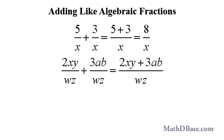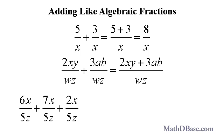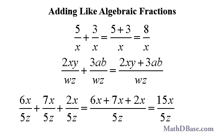As a last example, let's add three algebraic fractions. The process is the same for any number of addends. 6x over 5z plus 7x over 5z plus 2x over 5z is equal to 6x plus 7x plus 2x all over 5z. Since all three of the addends are like terms, they can be combined to get 15x in the numerator over 5z. The numerator and denominator can be divided by 5, giving us 3x over z.